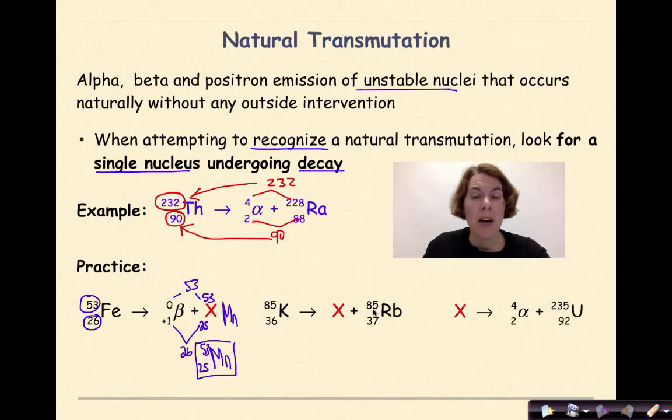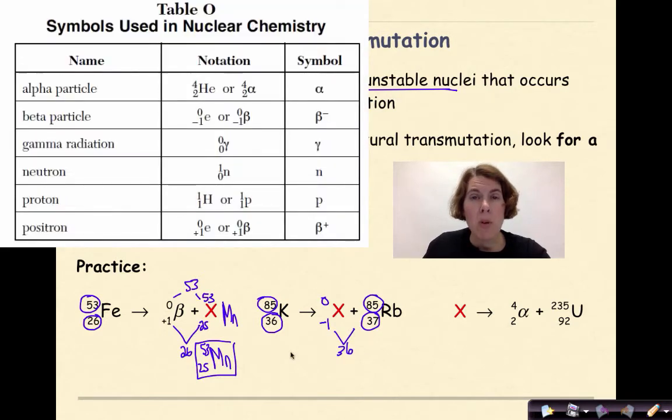Let's look at the next one. I have potassium-85 undergoing some type of decay to form rubidium-85, so what is this particle? Well my mass number is 85 and my mass number over here is 85, so my mass number for this particle has got to be zero. My atomic number is 36, my atomic number for rubidium is 37, so this particle has to have a negative one because 37 take away one will give me 36.